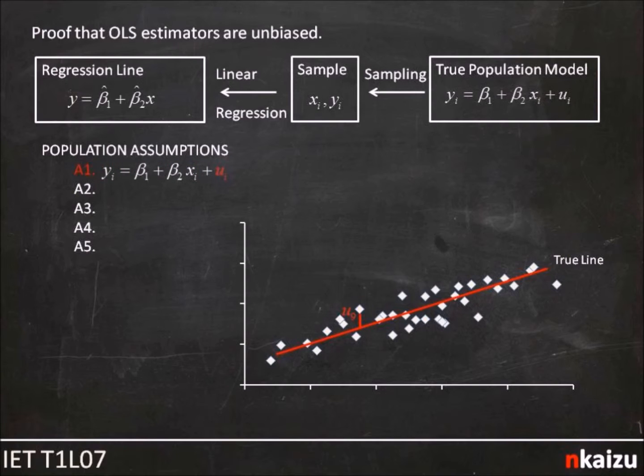The extra piece is the error term illustrated here on the diagram. Even though we are saying that the true relationship is this very simple one with just one explanatory variable X, we concede that things are never perfectly linear. And so we need a hopefully small error term to account for the small variation that cannot be explained entirely by the beta_1 plus beta_2 X part.